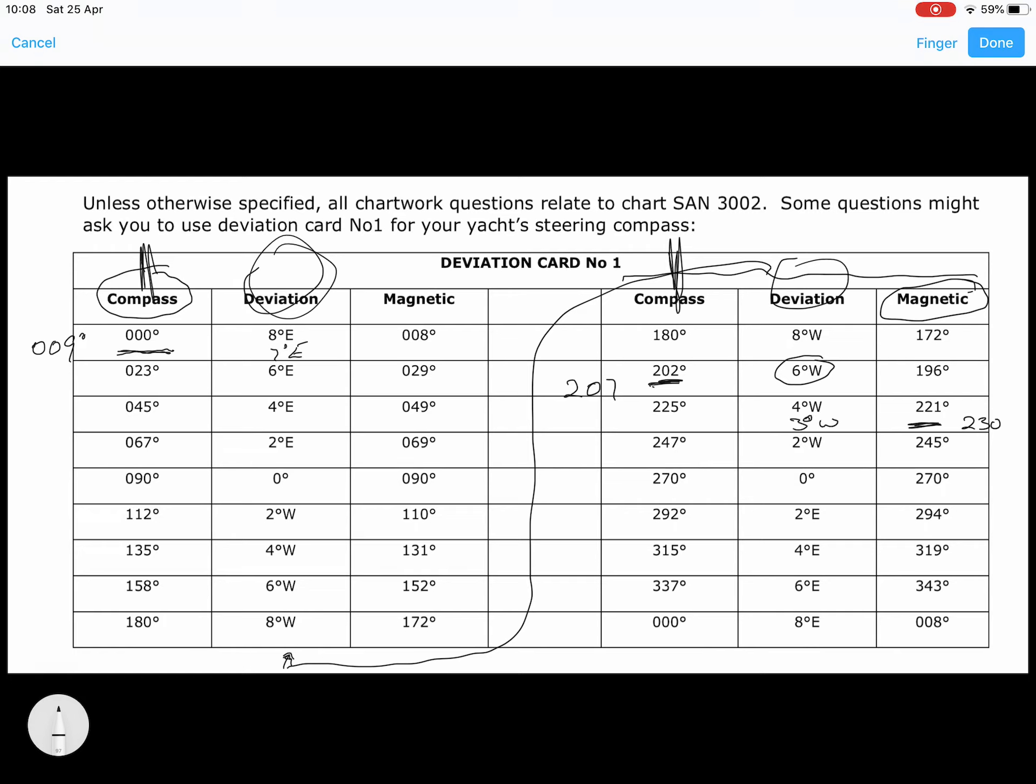So remember, handheld is the same as magnetic, and ship's compass is the same as compass on this table. Hope that helps, give me a shout.